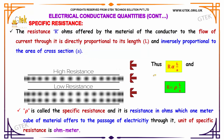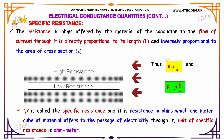Thus we can express this as: resistance R is directly proportional to L and inversely proportional to A, so R is proportional to L divided by A. By replacing the proportionality sign, we introduce a constant rho (ρ), which is nothing but specific resistance.